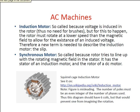AC machines have induction motors and synchronous motors. Induction motors are so called because voltage is induced in the rotor, but for this to happen the rotor must rotate at a lower speed than the magnetic field to allow for the existence of an induced voltage. Therefore a new term is needed to describe the induction motor: the slip. The synchronous motor has a rotor that tries to line up with the rotating magnetic field in the stator; it has the stator of an induction motor and the rotor of a DC motor.